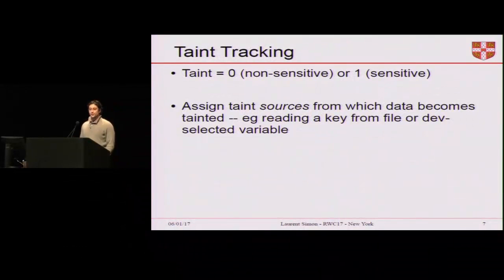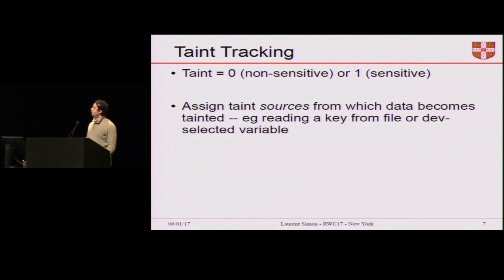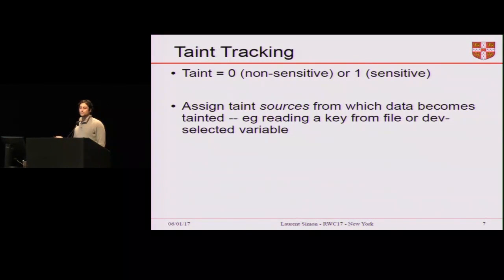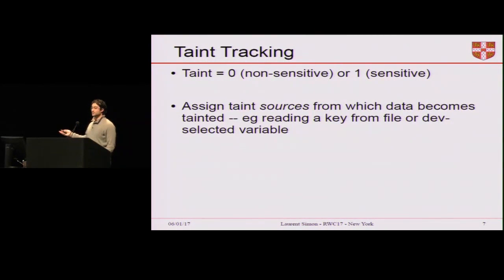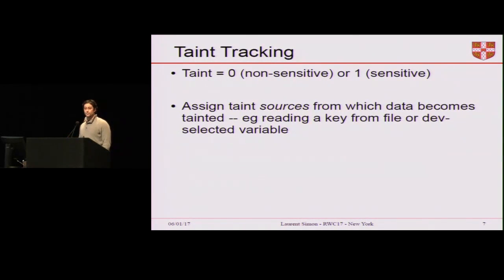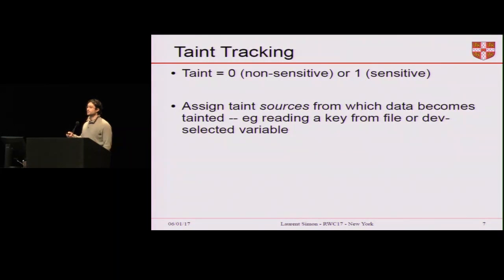We use a well-known technique called taint tracking. Think of the taint as a 0 or a 1. When a memory location is marked with a taint of 1, it means that memory location contains sensitive data. We declare taint sources from which data becomes tainted — typically a file containing sensitive data such as your private key. Every time program P reads from this file, we taint the memory location where the data is copied into.